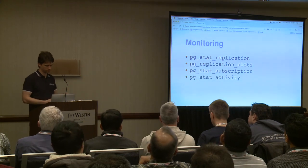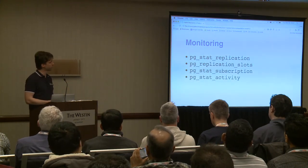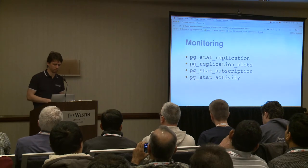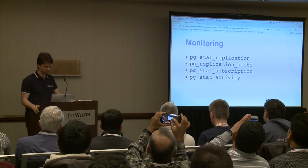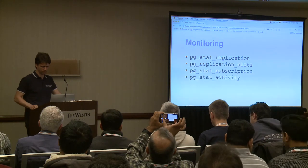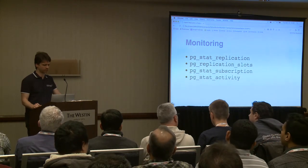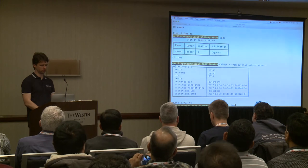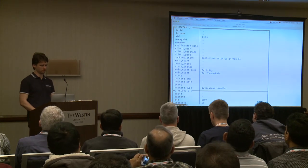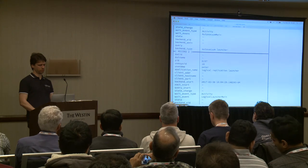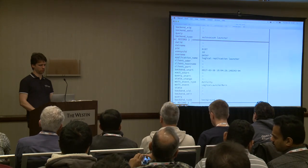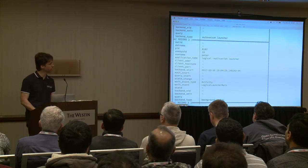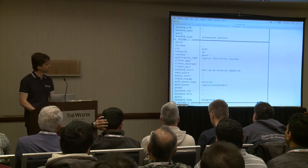For monitoring, you can use mostly the same views. In Postgres 10, background workers also show up in pg_stat_activity — including the autovacuum launcher and the logical apply launcher. So you can use pg_stat_activity to see all logical apply background workers running and whether they're waiting on anything like IO.